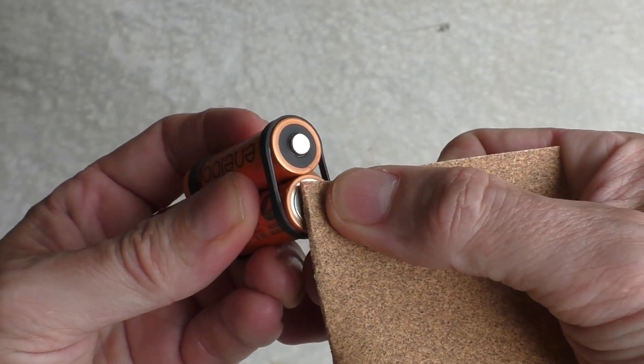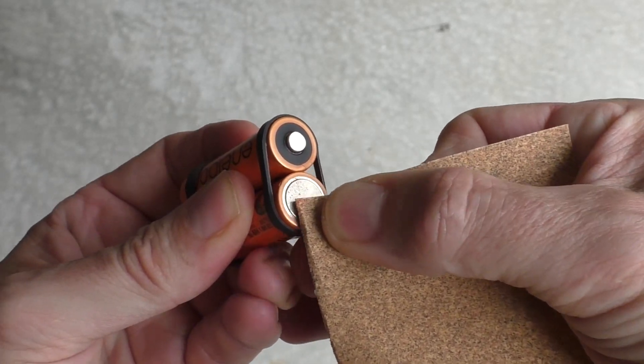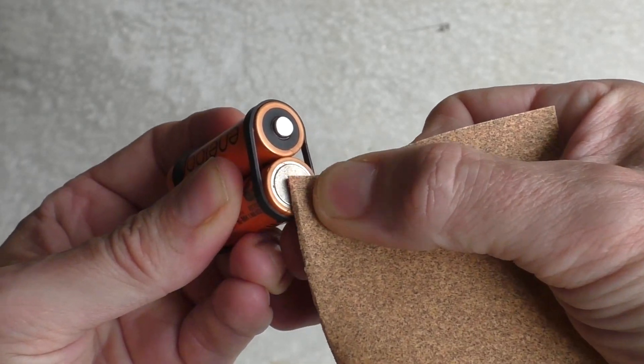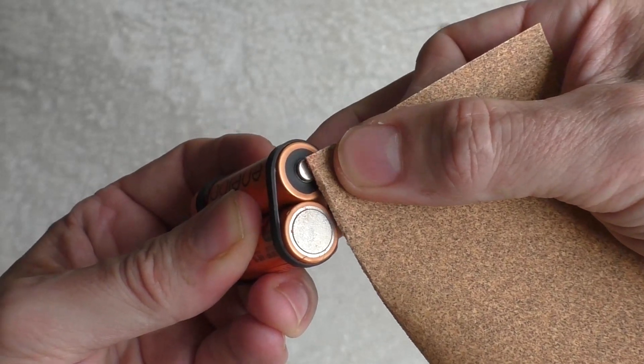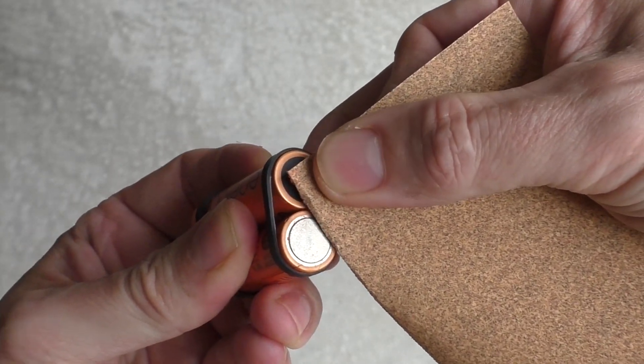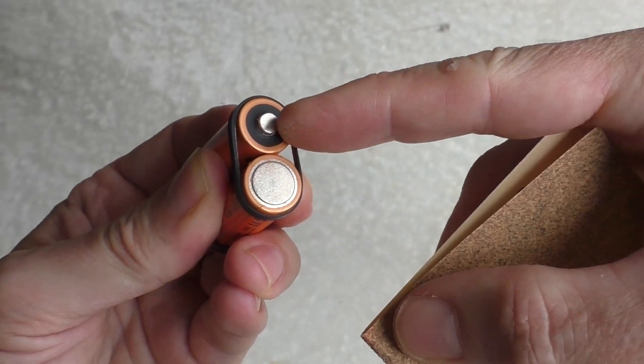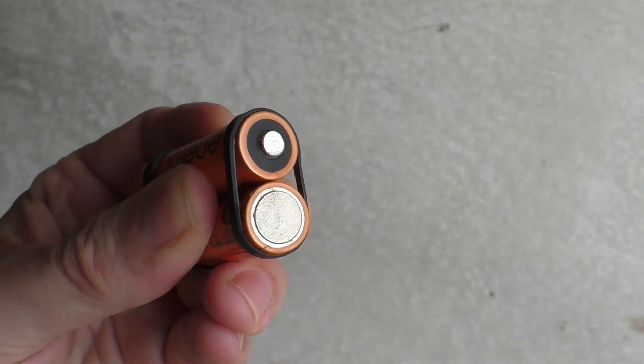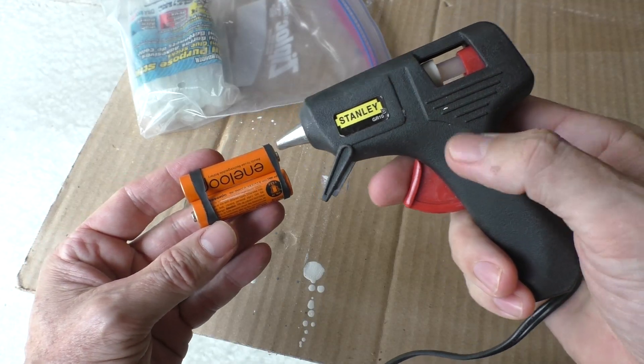I'm also going to rough up the metal on the bottom of the battery because I'm going to solder a wire from here to here and it'll help the solder stick. Use this hot glue gun.